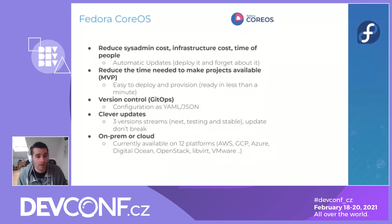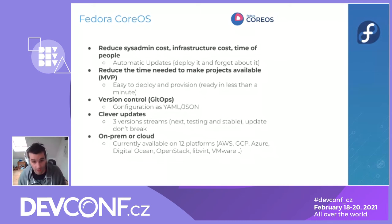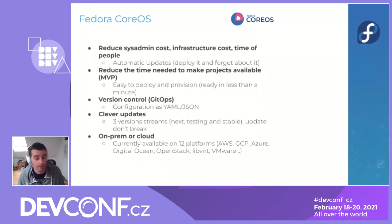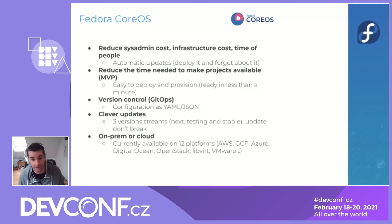Coming back to clever updates: one of the main goals of the Fedora CoreOS distribution is to have stable updates that don't break, and to be able to run on premises or in the cloud. Fedora CoreOS is currently available on 12 platforms. I listed the main platforms — it's very easy to move from one platform to the other since you have a common base and common trunk.